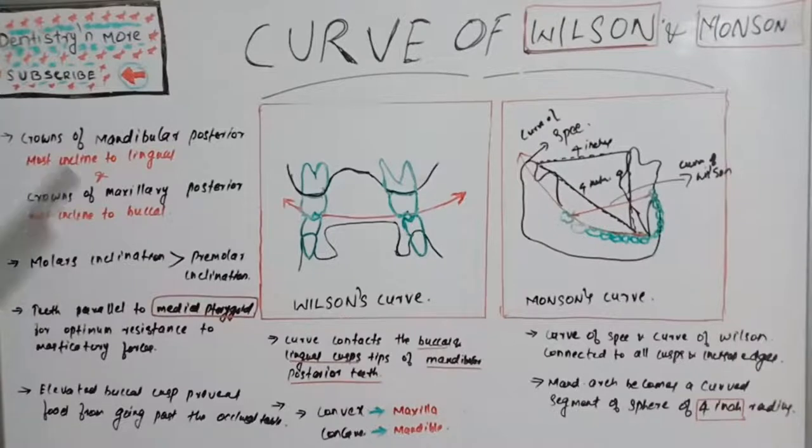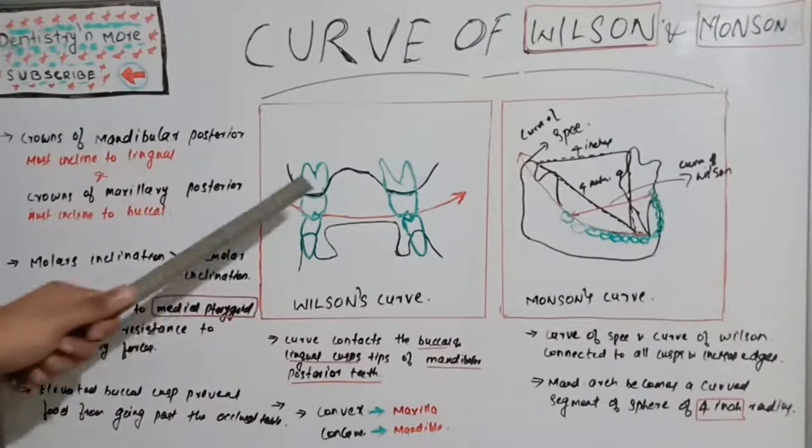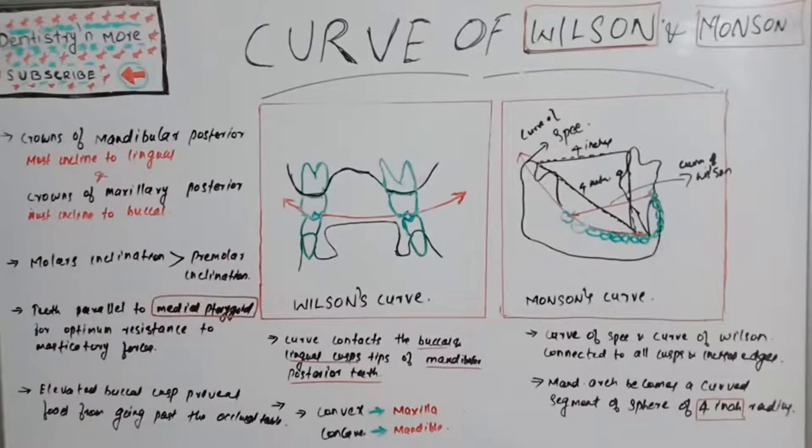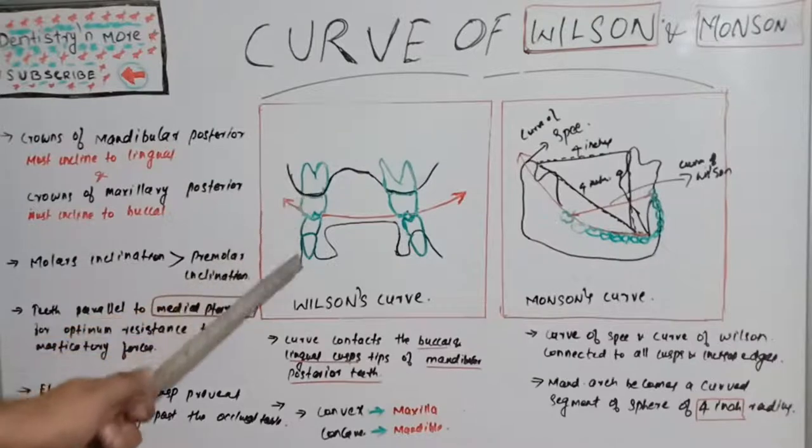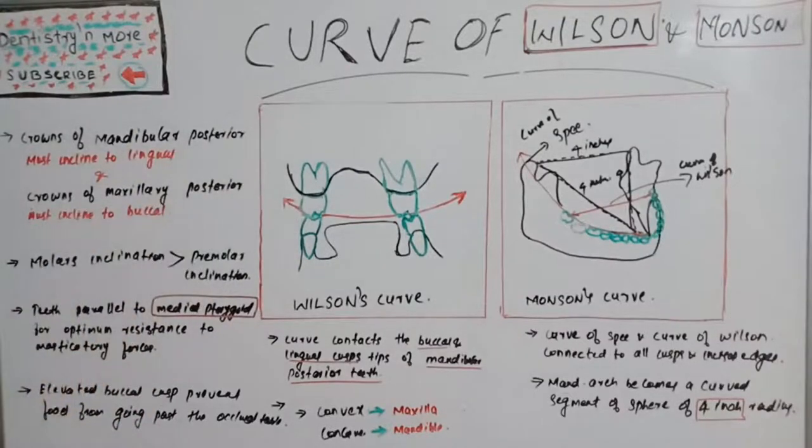The molar inclination should always be greater than the premolar inclination. When we arrange teeth in order to get a proper curve of Wilson or to have proper occlusion, we need to incline molars more than premolars. The teeth should be parallel to the medial pterygoid muscles for optimum resistance to masticatory forces. Also, this elevated buccal cusp prevents food from going past the occlusal table. So the reason for this inclination is that it keeps teeth parallel to the medial pterygoid to get optimum resistance of masticatory forces, and this buccal tilting prevents food from going past the occlusal table.